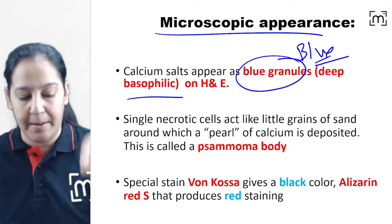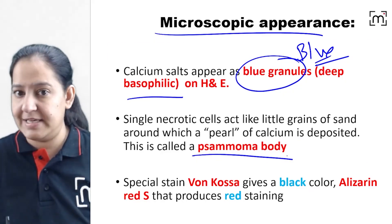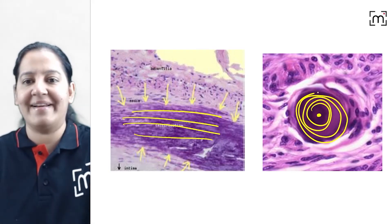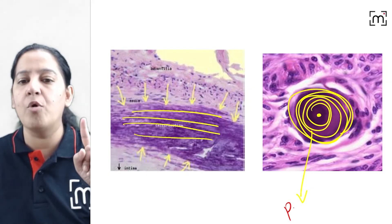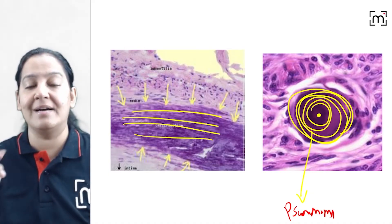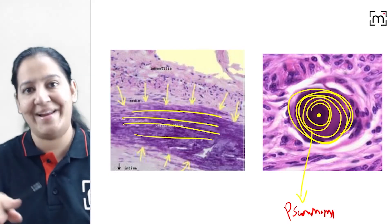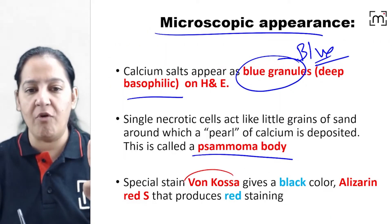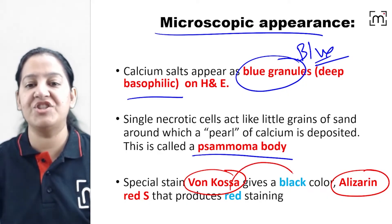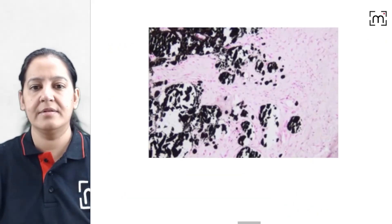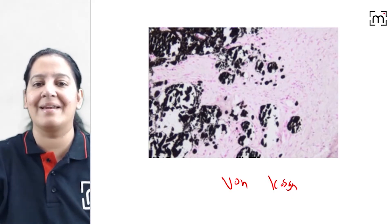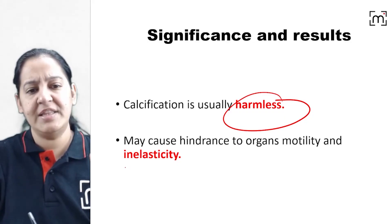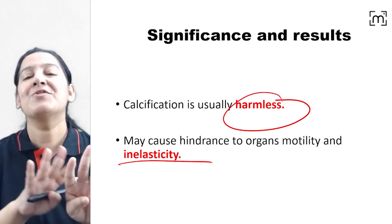Sometimes calcium is arranged in layers around a central pearl — this is known as a psammoma body (the P is silent). A psammoma body shows calcium deposited in concentric laminated layers around a central core. Special stains for calcium: von Kossa stain shows calcium as black, and Alizarin Red shows calcium as red. The significance of calcification: it is essentially harmless, but the elasticity of the tissue is lost wherever calcification is present.